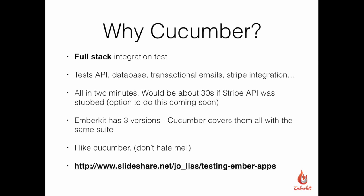EmberKit also has three versions: JavaScript, CoffeeScript, and the TomsterKit sample version. Cucumber covers them all with exactly the same tests — some step definitions might need to be slightly different in some cases, but you can write the tests once and test against multiple implementations. And since I'm planning an Ember CLI implementation soon, I thought it was really important to keep it flexible so I wouldn't have to write all my tests again for a new implementation.